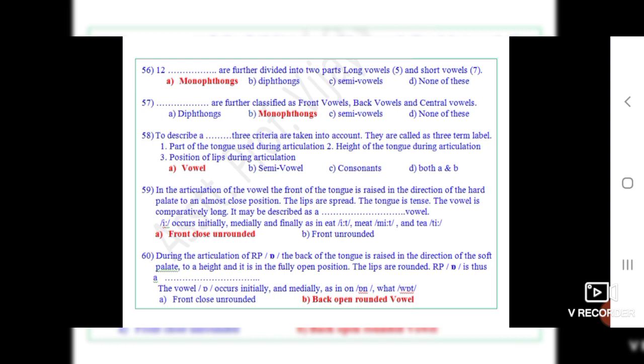Question number 58: To describe a dot dot, three criteria are taken into account. They are called the three term label. Part A, part of the tongue used during articulation. Second, height of the tongue during articulation. And third, position of the lips during articulation. The correct option is A, vowels.